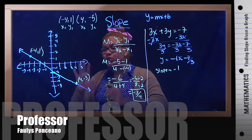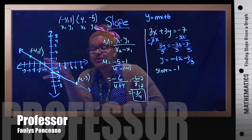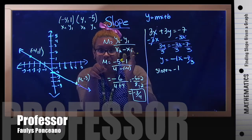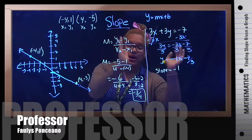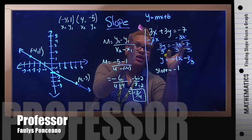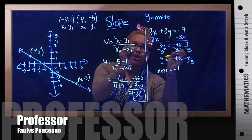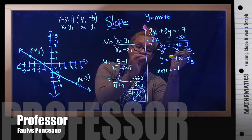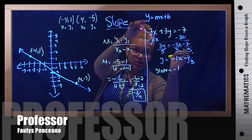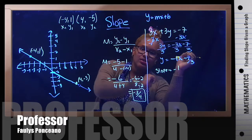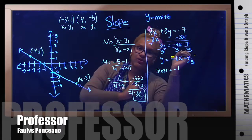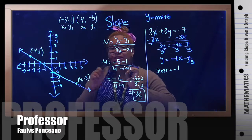So you had one example where you were given a graph — you had to pick two points to determine the slope using the slope formula. Then you had another example where you were given a linear equation and asked to find the slope — you solved for y to rewrite it in slope-intercept form and were able to just look at it to tell the slope, which is negative 1, and the y-intercept.